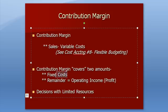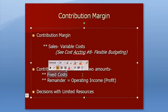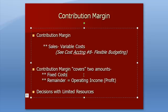It has to pay for my fixed costs like rent, leases, insurance premiums, any fixed costs you might name. And after I pay my fixed costs, the remainder is operating income or profit.